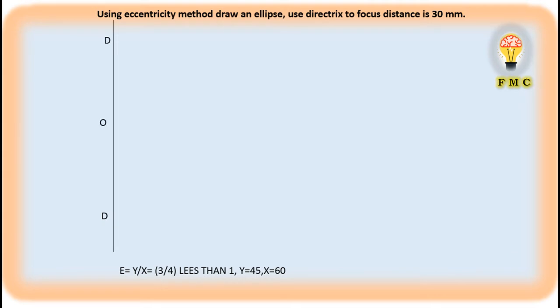First, as usual we need one directrix. We are creating one vertical line, marking one center point as O, with DD. Sometimes if you want you can give the name D-dash. After that I need one horizontal line. Now we have one small hint from the problem — directrix to focus distance is 30mm. This is the directrix. From this we will take 30mm distance and mark one point that is the focus.